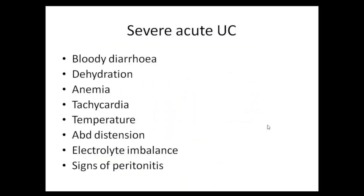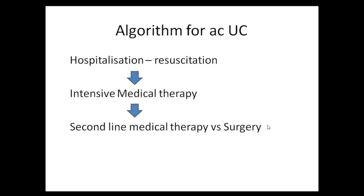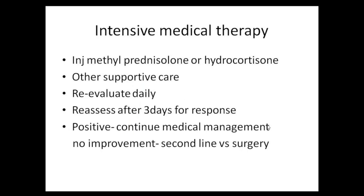In acute severe ulcerative colitis, the patient typically presents with bloody diarrhea, dehydration, anemia, tachycardia, temperature elevation, abdominal distension, electrolyte imbalance, and signs of peritonitis if there is perforation. The management algorithm is: hospitalize, resuscitate with IV fluids, IV antibiotics, blood transfusion; start intensive medical therapy; then reassess for either second-line medical therapy or surgery. The basis of treatment for acute severe UC is IV steroids — either methylprednisolone 60 mg IV once daily or hydrocortisone 100 mg IV four times a day.